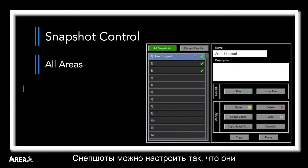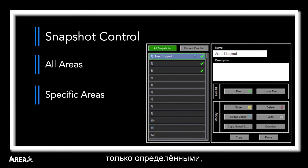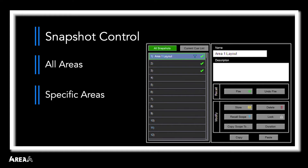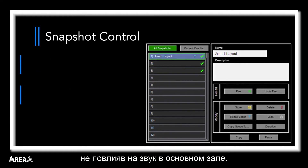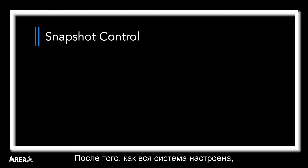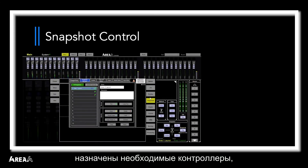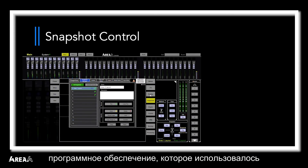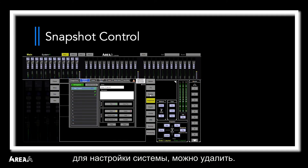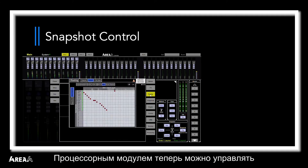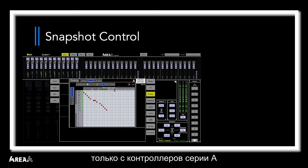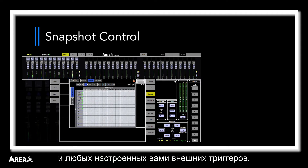Snapshots can be either set to control all areas or be limited to just a specific area. For example, you could have a controller in a breakout room fire a snapshot to repurpose that room without affecting the audio in the main room. Once the system is set up, controllers assigned, and snapshots created, the controller software used to configure the system can be removed. The engine can then be controlled just by your A-Controllers and any external triggers you've set up.